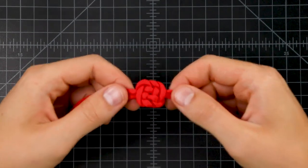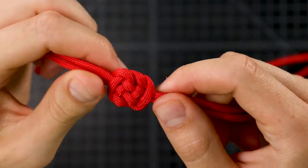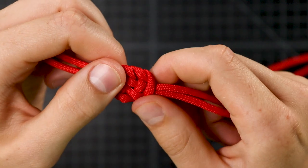So here's what it looks like when it's all tightened down. Pretty cool square shape. Decorative knot that is often found in Chinese temples.